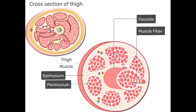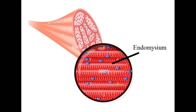Once you dissect epimysium, you'll see bundles of threads, each wrapped in a connective sheath. These bundles are fasciculi and the connective sheath is perimysium. The function of the perimysium is to keep one fascicle separate from another. Let's take a closer look at fasciculi under a microscope to study them further.